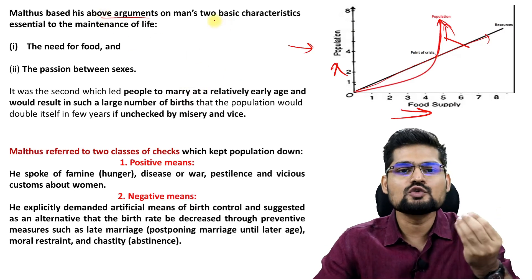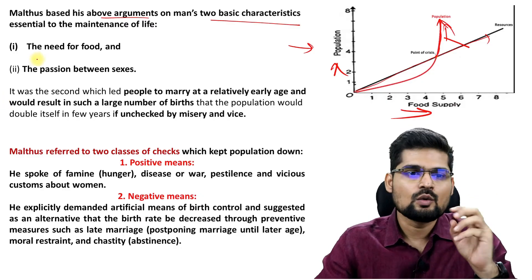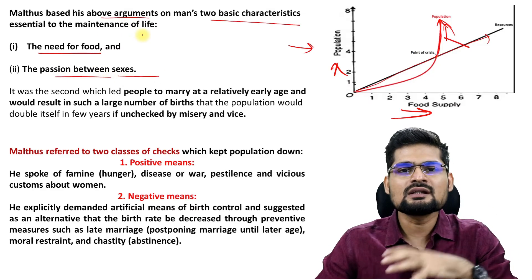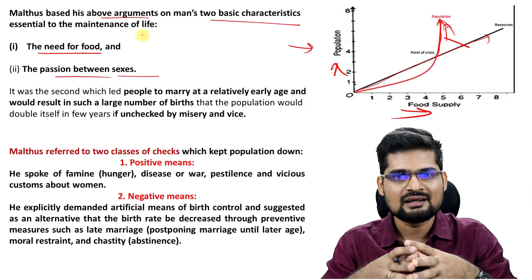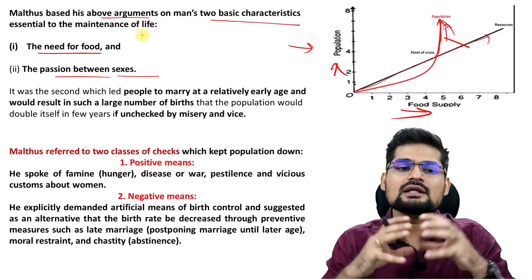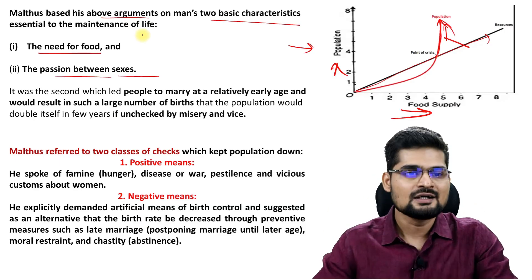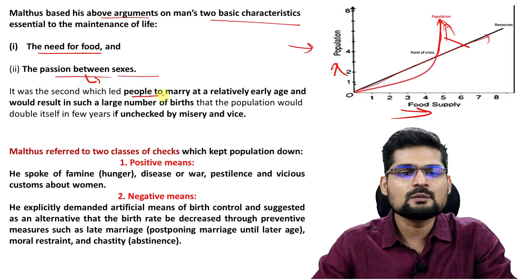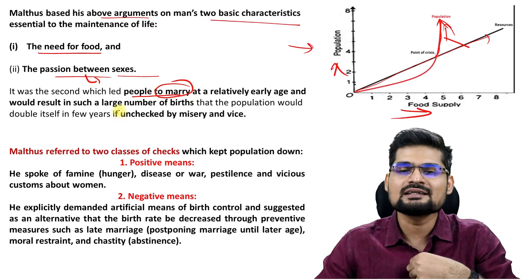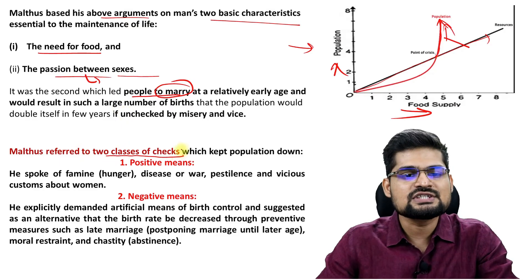Malthus based his arguments on two basic characteristics of human beings: one is the need for food — the subsistence part — and the second is the passion between sexes. Male and female would always love to procreate and have a future. These two are inherent to human beings, and the second characteristic led people to marry at a relatively younger age and resulted in large numbers of population.